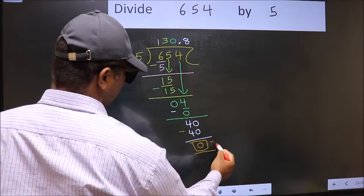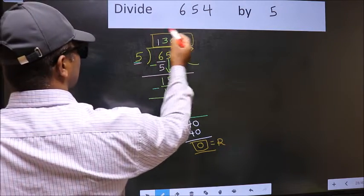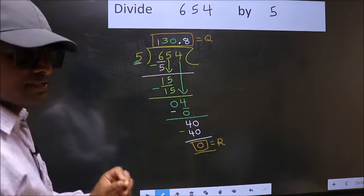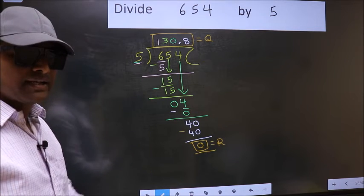So this is our remainder, and this is our quotient. Did you understand where the mistake happens? You should not do that mistake.